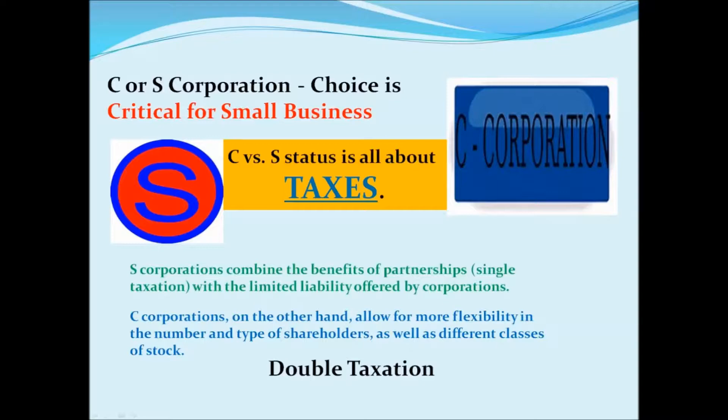The double taxation comes in one of two ways. A C corporation, if it has officers and pays those officers, the officers have to be W-2 salaried individuals — and because of that, the officers themselves pay income tax. The biggest concern about C corporation double taxation is that if they issue dividends or share the profits with the shareholders, the shareholders pay tax on what they receive and the corporation also pays tax on that same amount. The corporation pays tax on 100% of its profits, and distributions to shareholders are not tax deductible — they are not an expense. Therefore there's a double taxation on the amount given to shareholders.